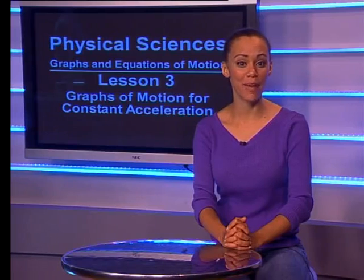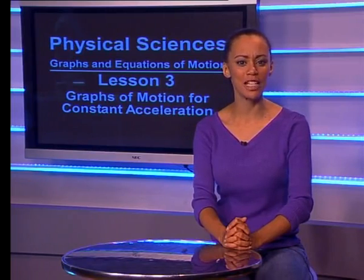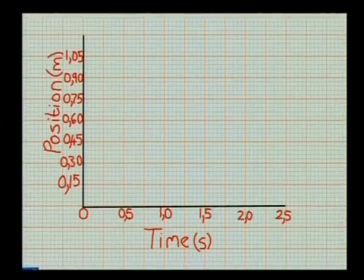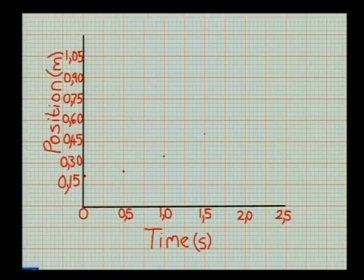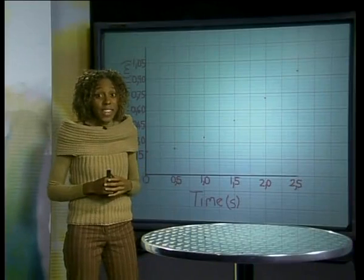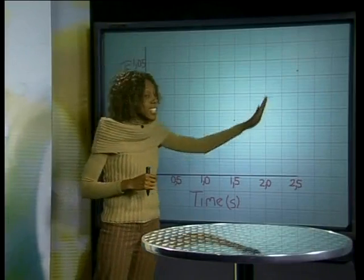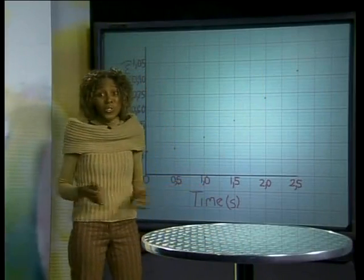Now that we have a table of displacement versus time, Nelly shows us how to use it to draw a displacement versus time graph. On this graph, time is the independent variable, so we place it on the horizontal axis, and the position, the dependent variable, is placed on the vertical axis. I am plotting the data from the table onto the graph. Notice that these points do not lie in a straight line, so we can't use a ruler. I will draw a line through these points freehand.